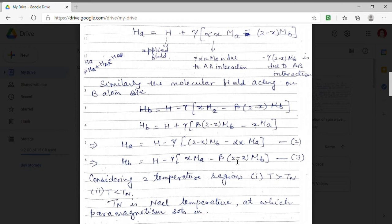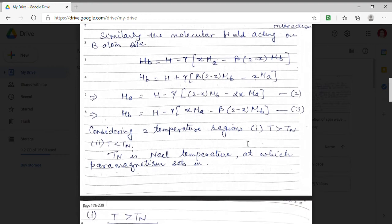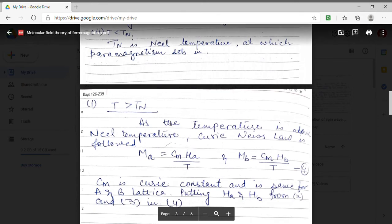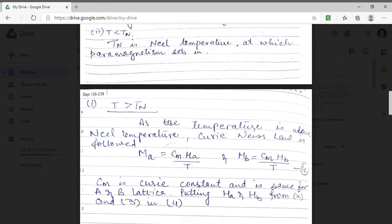Now Neel took two temperature ranges. First is the temperature range when T is greater than TN and second is T less than TN. Here what is TN? TN is the Neel temperature. That means the temperature at which paramagnetism set in. So first of all I am taking the range T greater than TN. This is the temperature above Neel temperature.